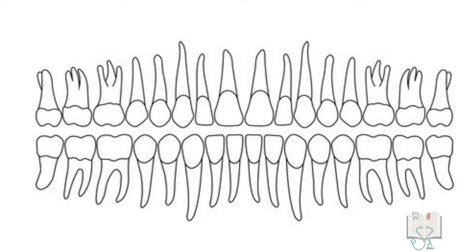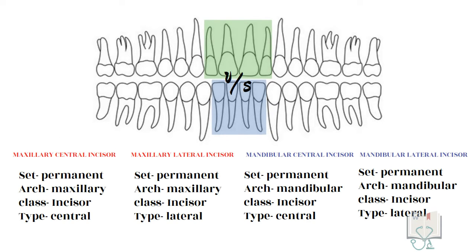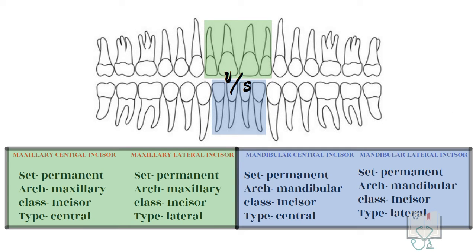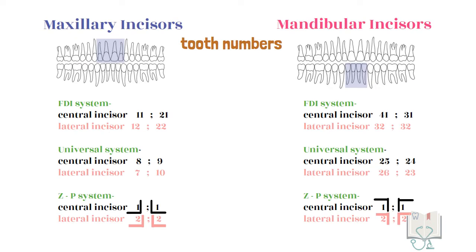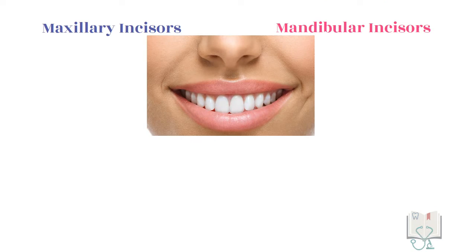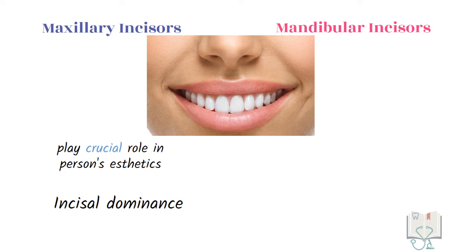There are in total eight permanent incisors in the oral cavity — four in the maxilla and four in the mandible. Here we'll study the differences between maxillary incisors and mandibular incisors. The tooth numbers for both central incisors and lateral incisors are different, as the arch trait is different in them. The maxillary incisors play a crucial part in the aesthetics of a person as they are most noticeable, which is known as incisal dominance.